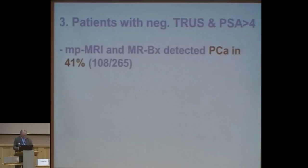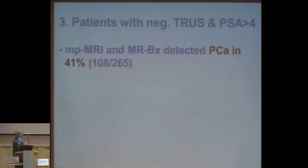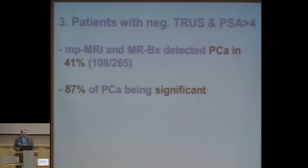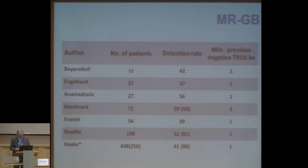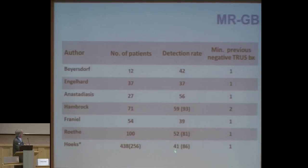This other paper also appeared in European Urology. We evaluated patients referred with one negative TRUS biopsy and elevated PSA, and we saw a detection rate of 41% in a quite large patient cohort — almost 90% being significant, and only two cores sampled, not twelve. Other authors on MR-guided biopsy have reported similar yields from 37% to 59% — detection yields after at least one negative TRUS biopsy.